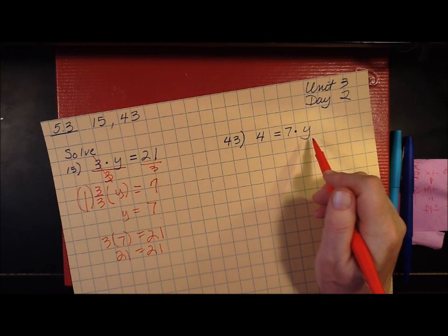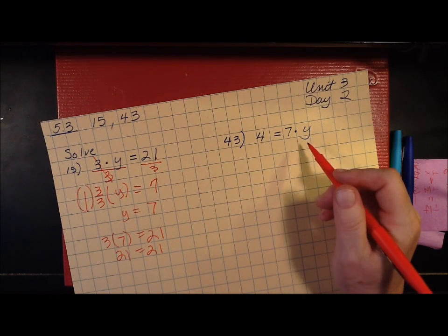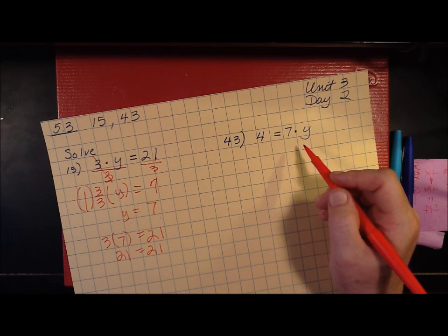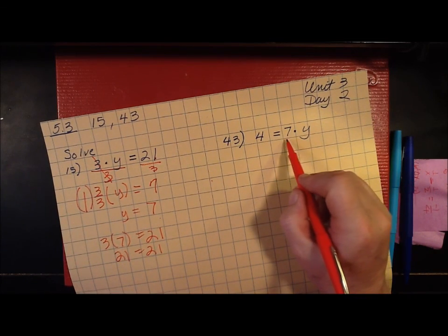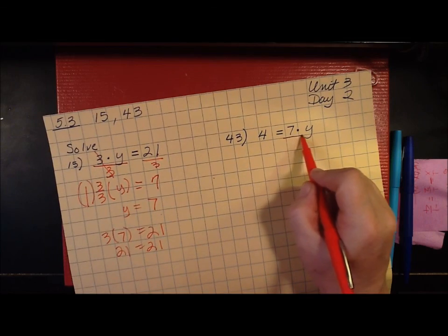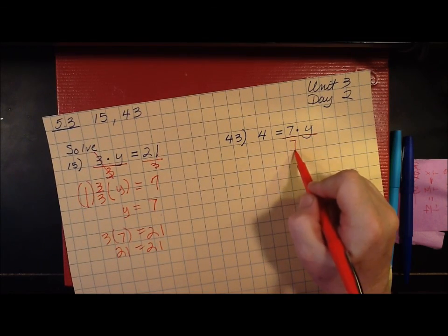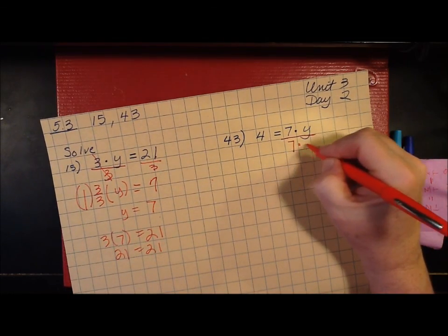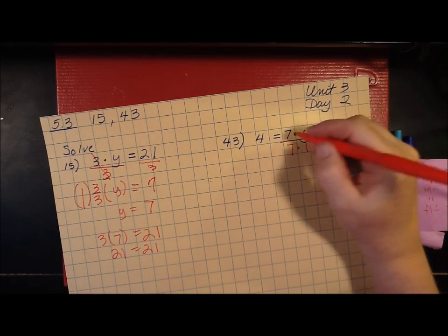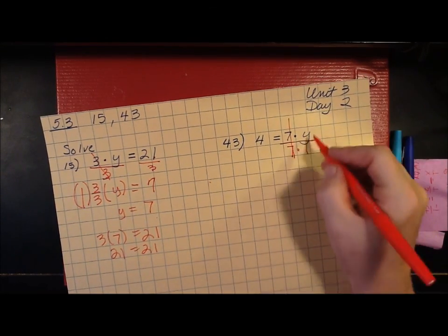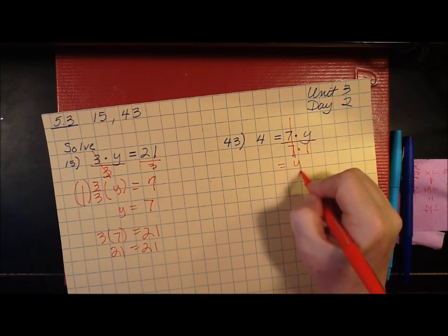Multiplication is the opposite of, or inverse, of division. So to undo this, I'm going to divide this side by 7. And that might help. 7 times 1. That turned into 1. And that just was left behind as y.